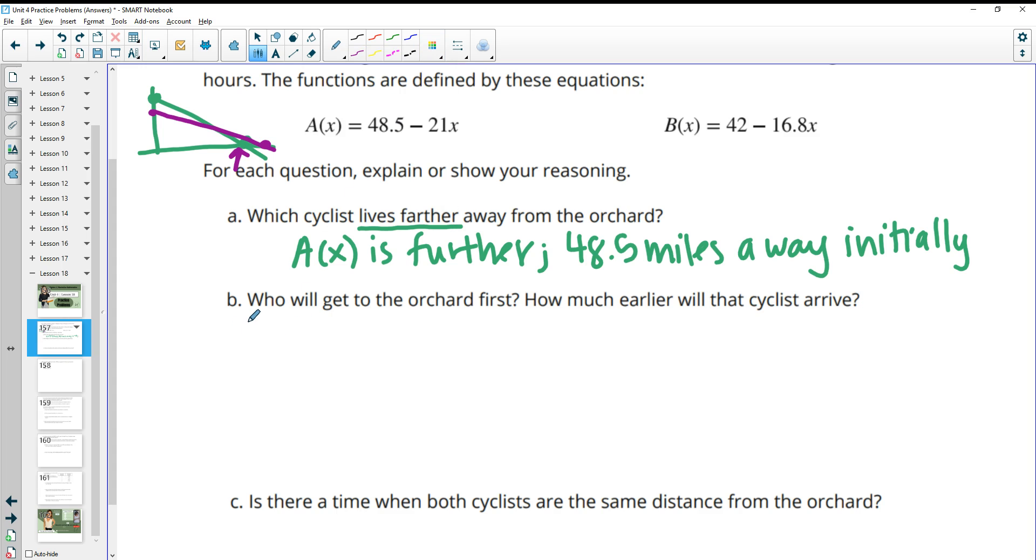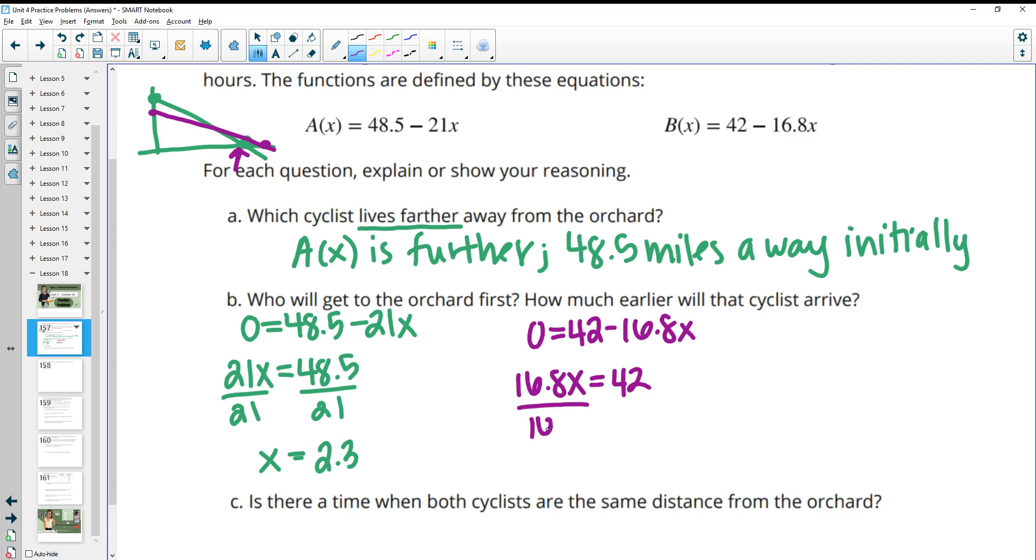I'm just going to solve these equations. They get to the orchard means that their distance is zero. So if I solve this equation, I could just add 21X to both sides, then divide by 21. And I'll get that this person gets there in about 2.3. And then the B cyclist, I'll add 16.8X to both sides and then divide by 16.8. And I'm going to get 2.5 hours. So that means that this one is faster, got there in 2.3 hours versus 2.5, so about 0.2 hours faster.